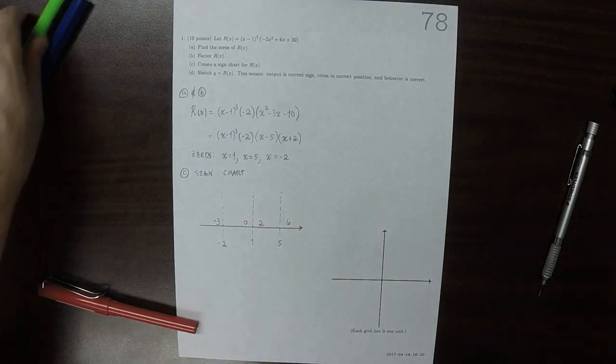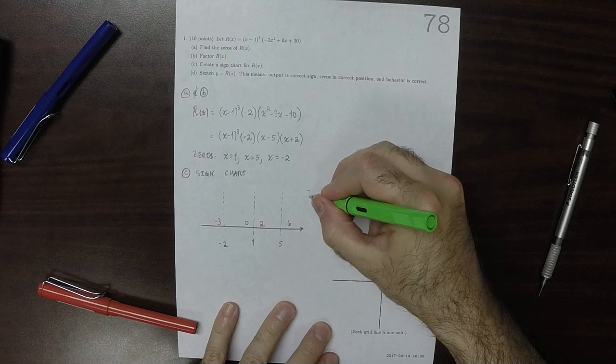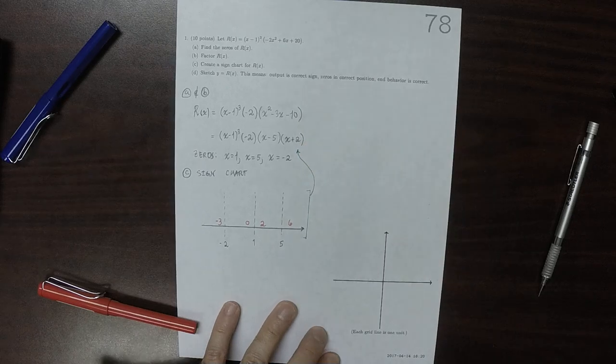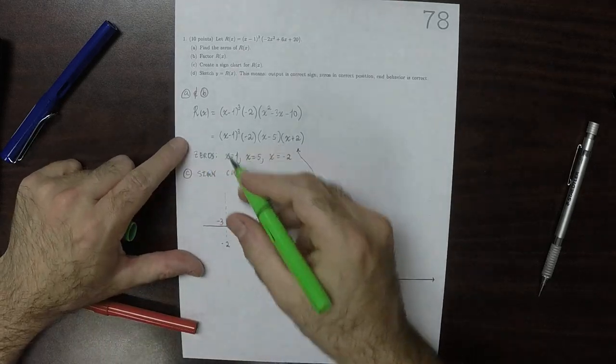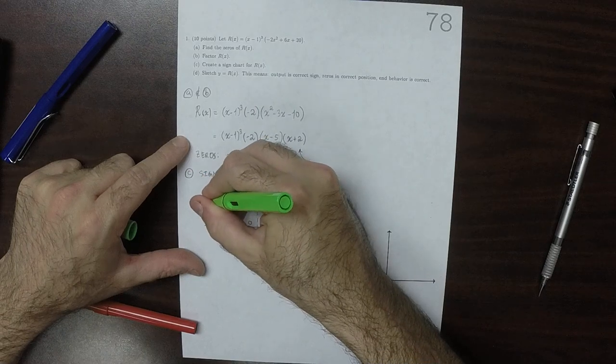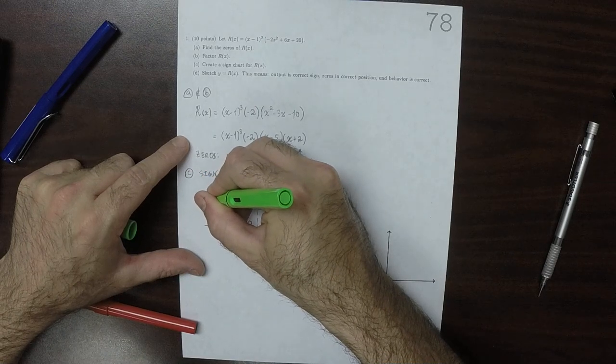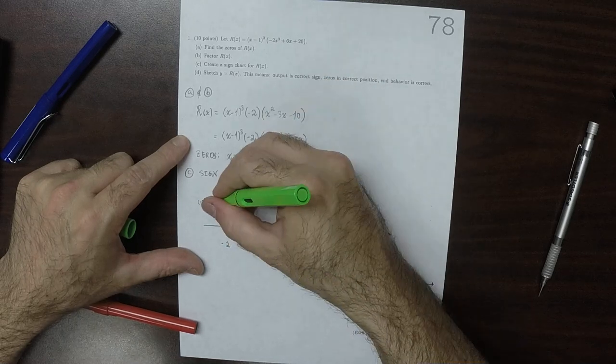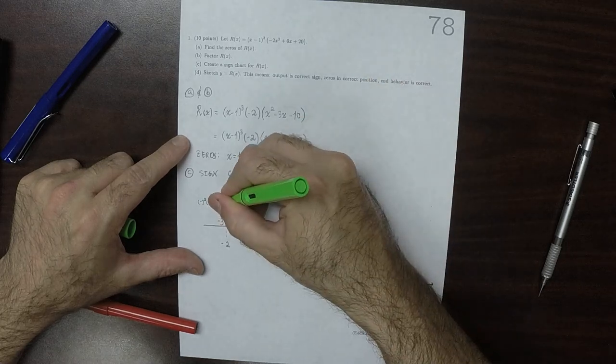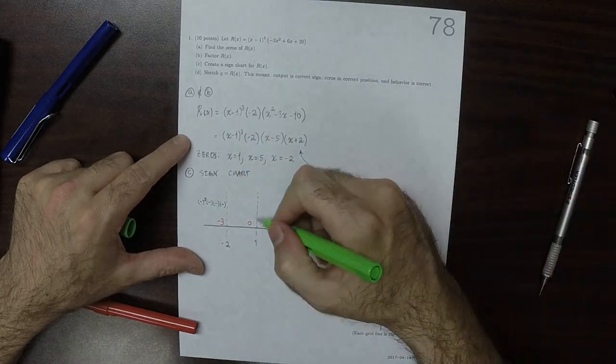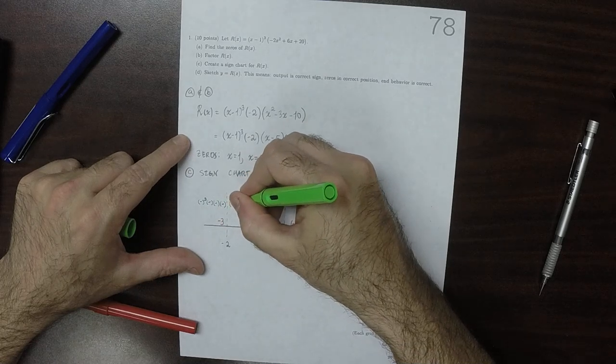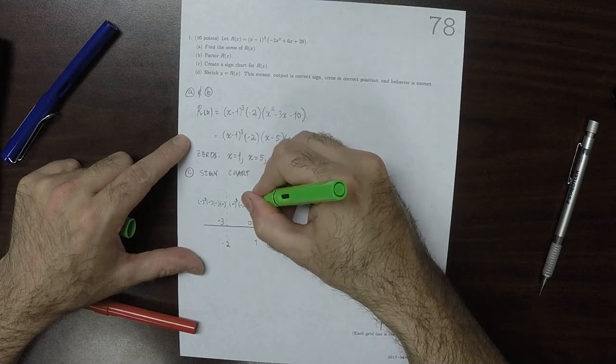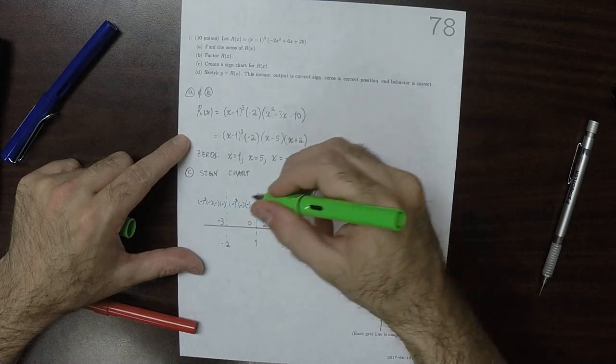So what we're going to do is we're going to take those sample points and plug them into that factored expression. OK. So then plugging in negative 3, that would be negative cubed, and then negative 2 is always negative, and then negative, and then negative. So we have a bunch of negatives there. So now plugging in 0, that would be negative cubed, negative, negative, and then positive.